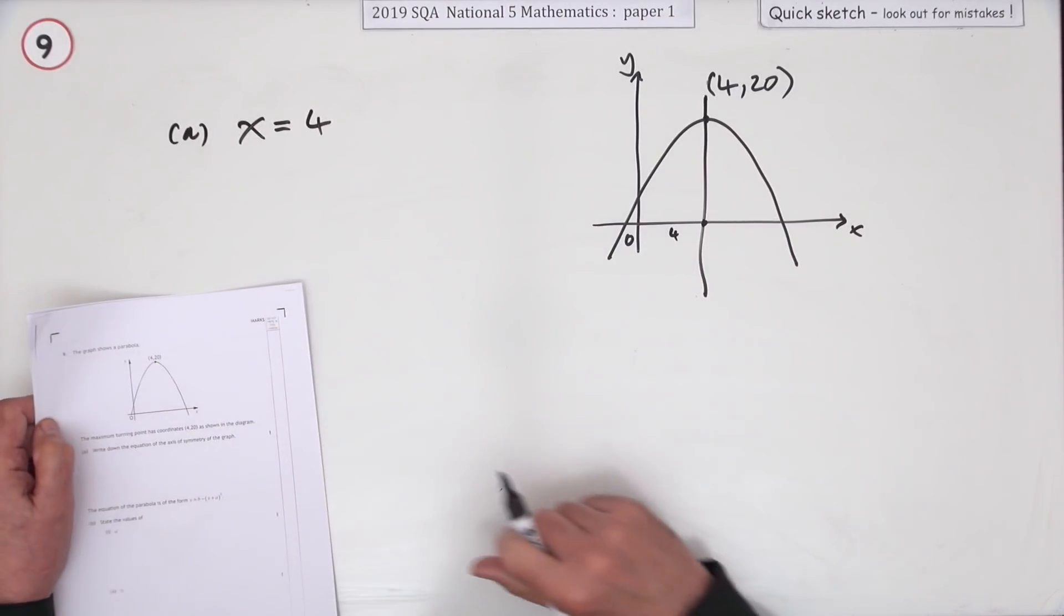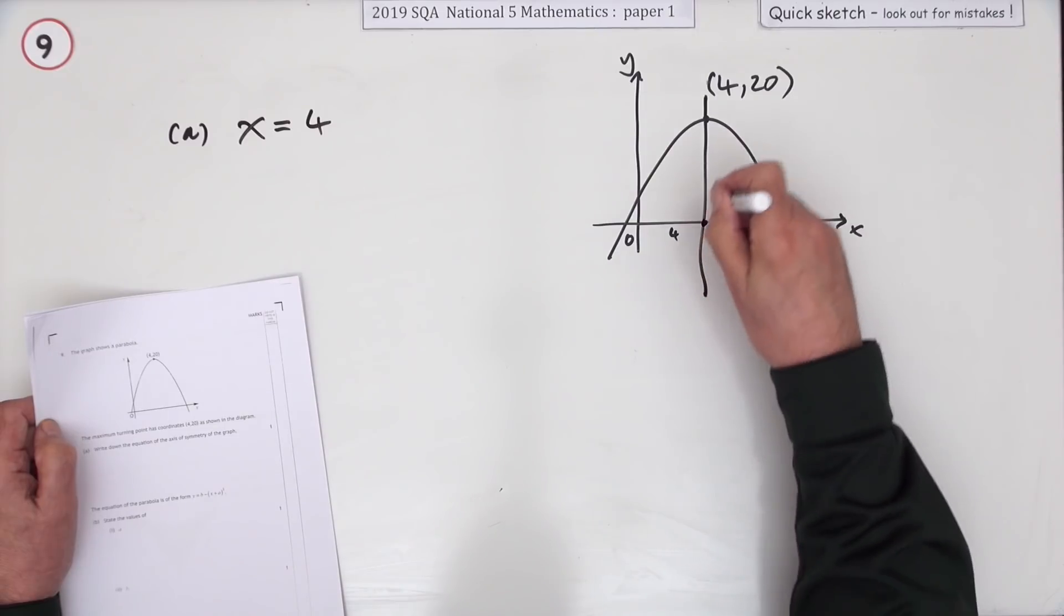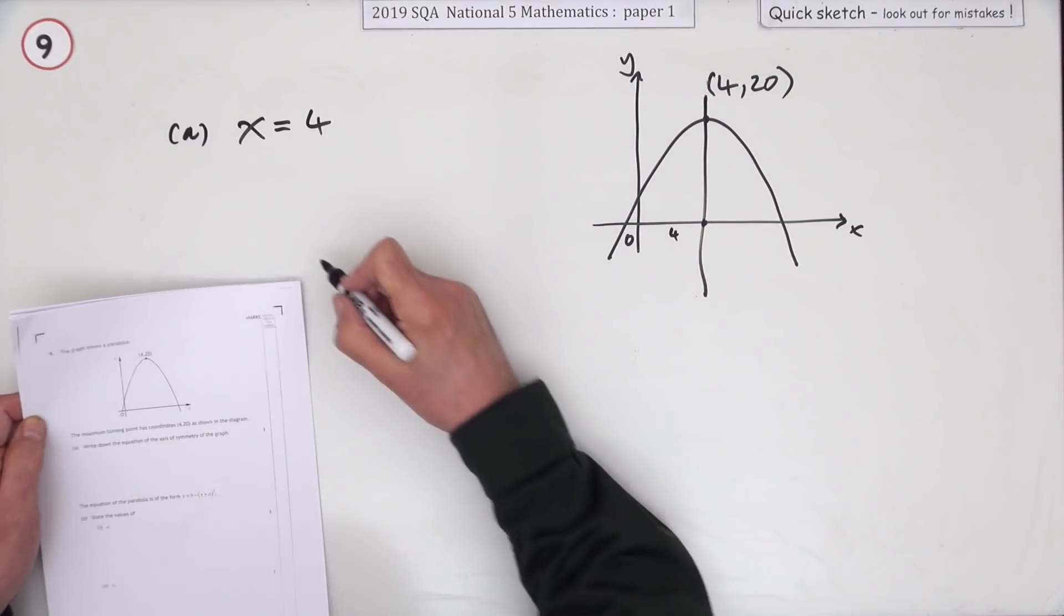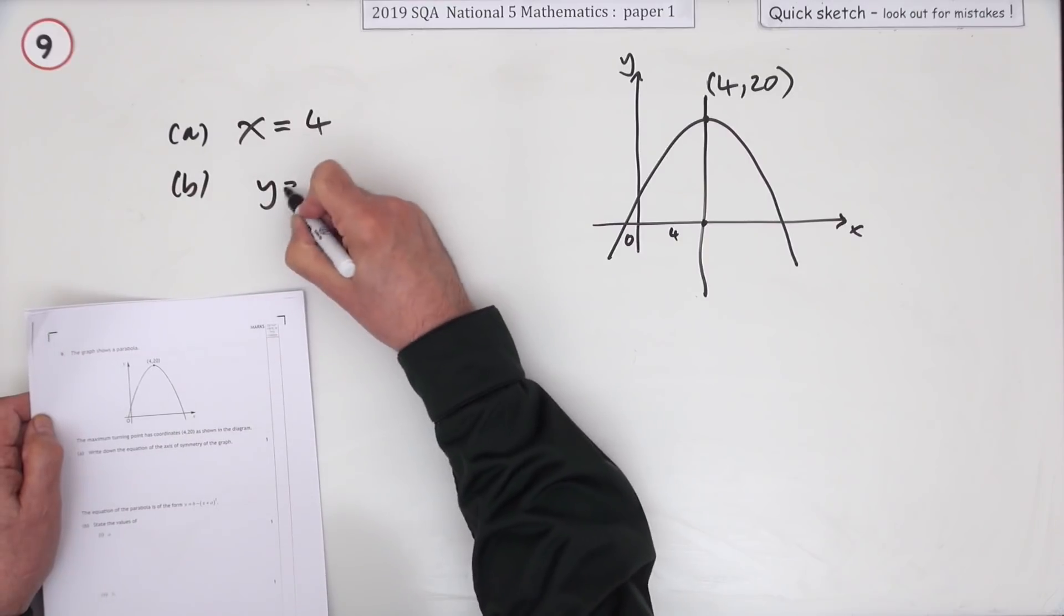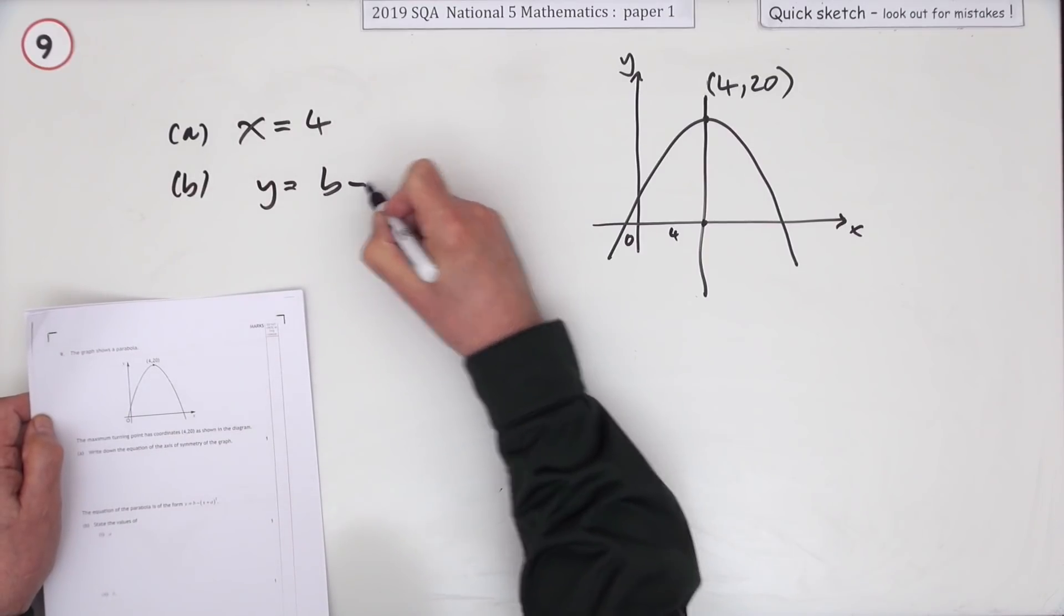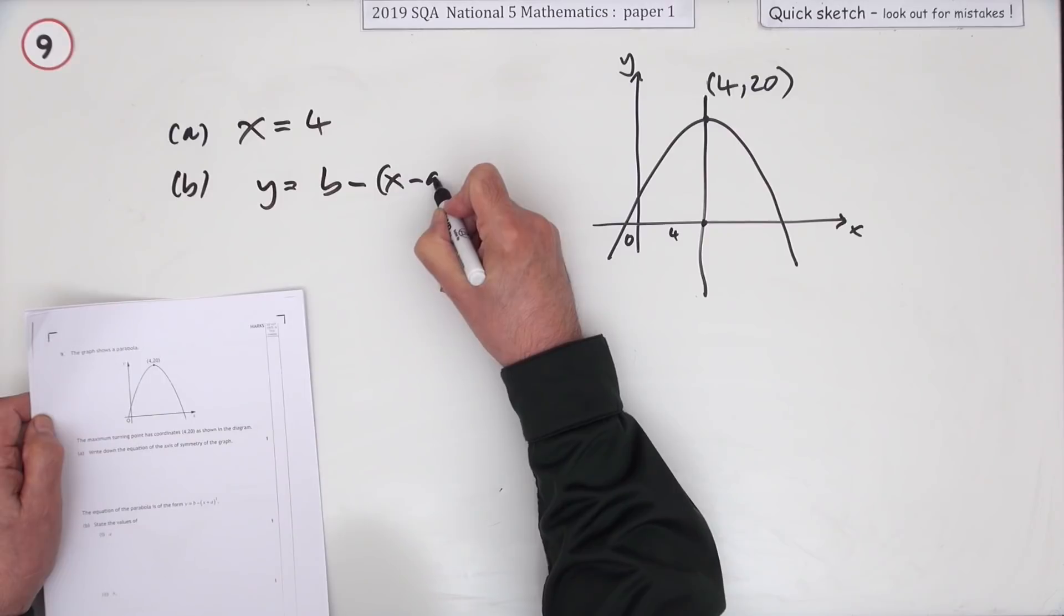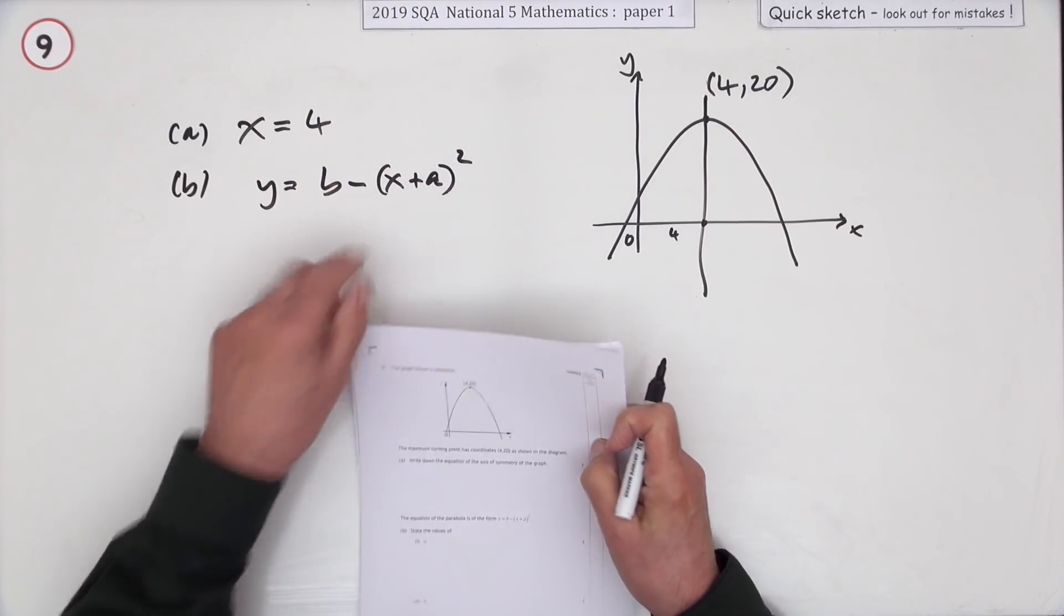The axis of symmetry intersects the x-axis at 4 along. The axis of symmetry is just simply x equals 4. Every point on that line has got an x coordinate of 4. Part B says y is equal to b minus (x + a) squared - that's the equation of it written.